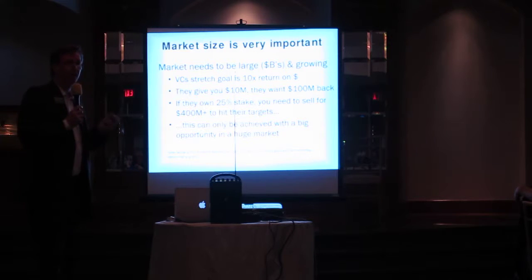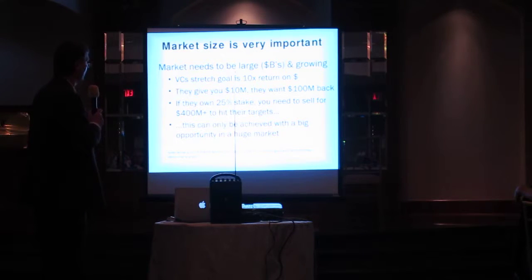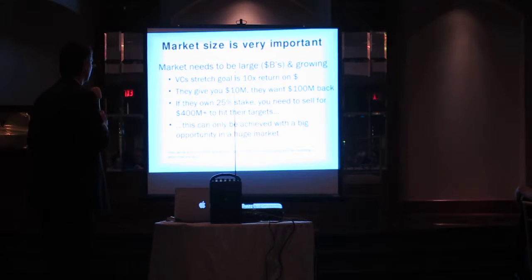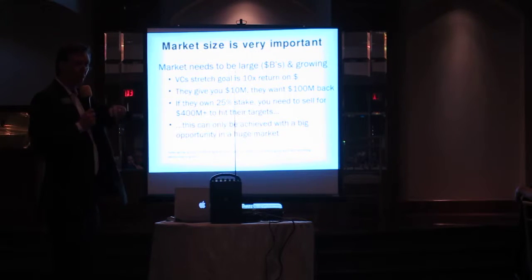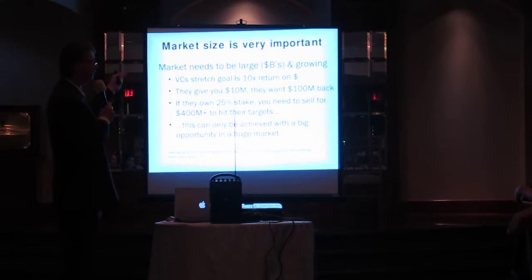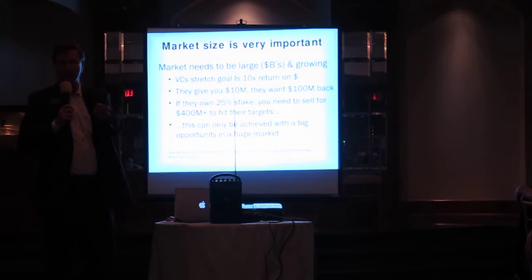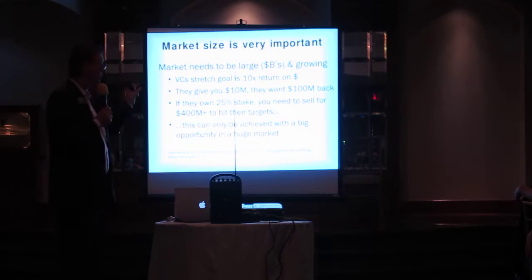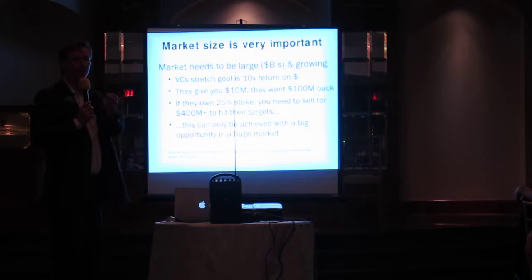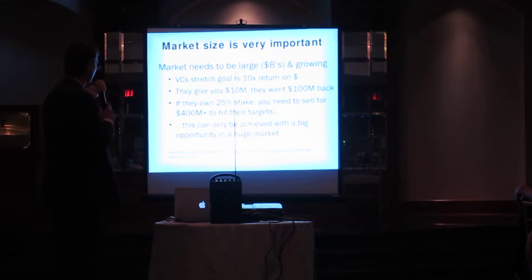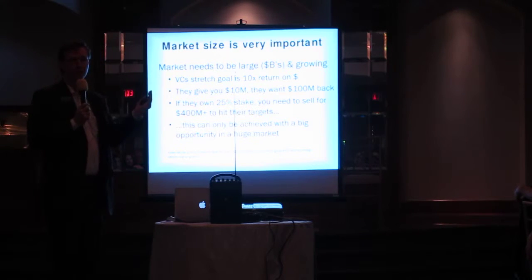The VC's stretch goal is a ten-times return. For example, if an investor puts in $10 million, they want to see $100 million coming back. If they own a 25% stake in a company valued at $40 million at the time of investment — meaning they gave $10 million — they would like to see $100 million returned. In other words, in five to seven years, when the company does an IPO, they'd like the company to be valued at $400 million so that their 25% stake is worth $100 million.